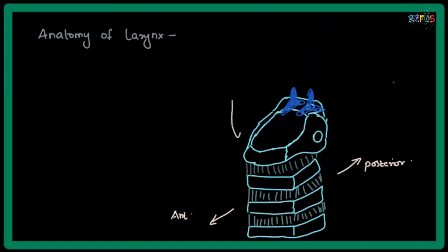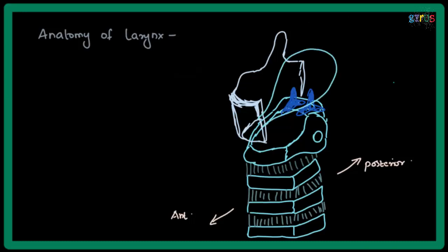Now let me draw. Since this thyroid cartilage obstructs the view of what we are going to discuss next, let me draw a cut section of this cartilage. And this is where the epiglottis is attached. It is the posterior wall of the anterior surface of the cartilage.